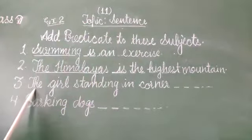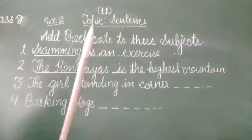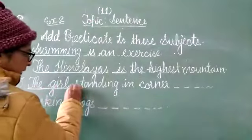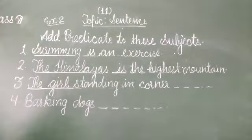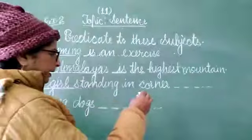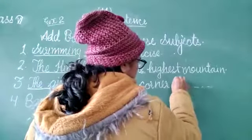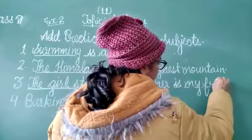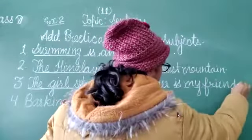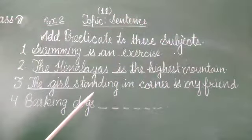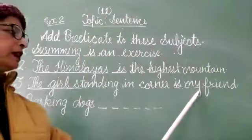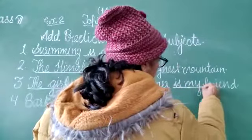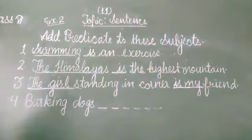Next, the third sentence: the girl standing in corner. The girl standing in the corner is the subject. Now we can add accordingly - the girl standing in corner is my friend, is my sister. You can write accordingly, but I am just going to write 'the girl standing in corner is my friend.' From this helping verb, the predicate part is starting.